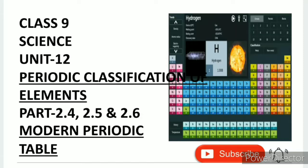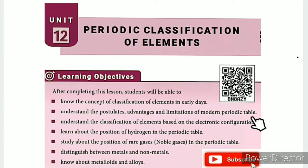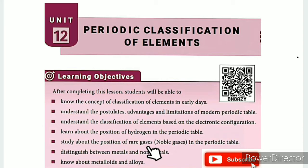Class 9 Science Unit 12, Periodic Classification of Elements, Parts 2.4, 2.5 and 2.6 - Modern Periodic Table. Learning objectives are: know the concept of classification of elements in early days; understand the postulates, advantages and limitations of the modern periodic table; understand the classification of elements based on electronic configuration; learn about the position of hydrogen in the periodic table; study about the position of rare gases in the periodic table; and distinguish between metals and non-metals.